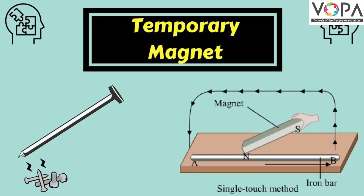Next characteristic. Take a needle or nail. Place it steady on the table. Keep rubbing a magnet over it from one end to the other end. Do this seven or eight times. Now take a few pins near the needle or nail. What is seen? In this way, magnetic objects acquire magnetism.